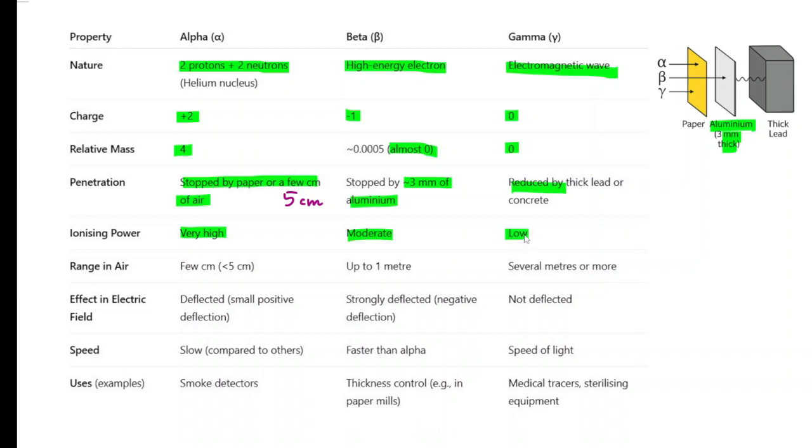Range, beta radiation is up to one meter, 30 centimeters to one meter. Gamma radiation can go lots of meters.